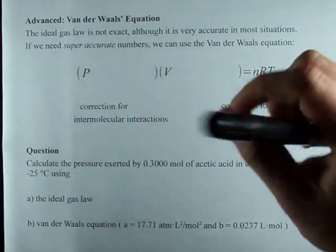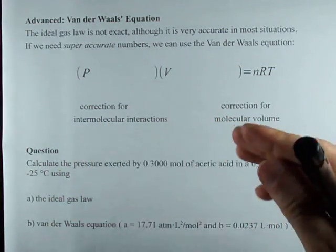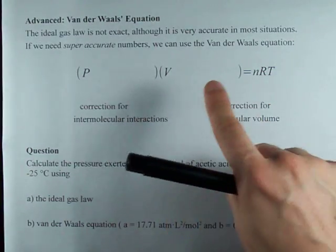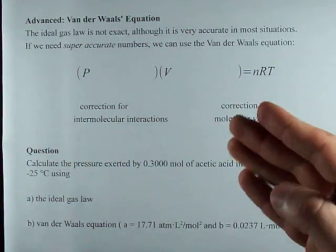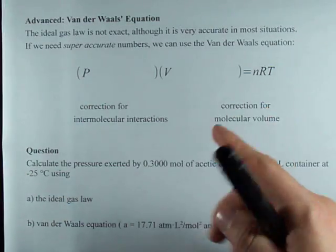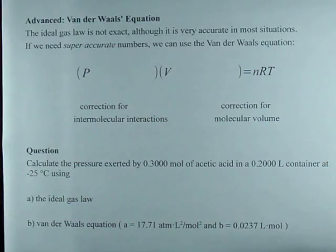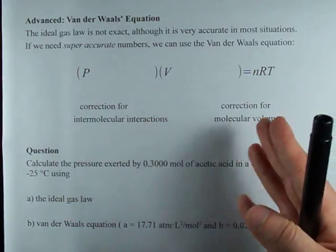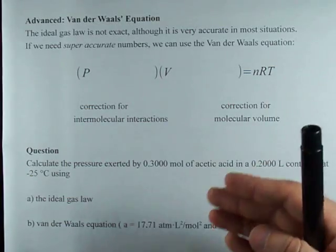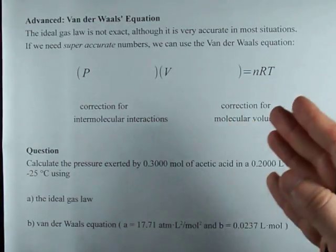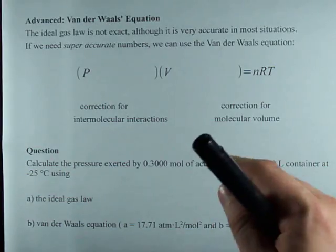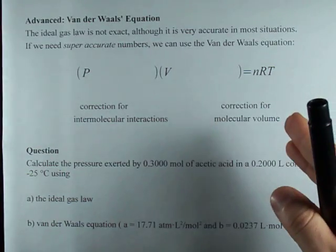The Van der Waals equation is a more accurate version of the ideal gas equation. The ideal gas law PV equals NRT works in most cases, but it makes some assumptions like there are no intermolecular forces or the molecules don't have any volume. Both of which aren't true, but for the most part in normal situations they're close enough to true that we don't care about the difference.